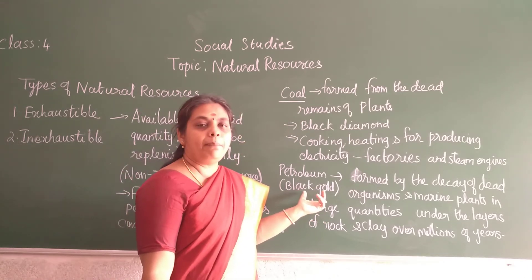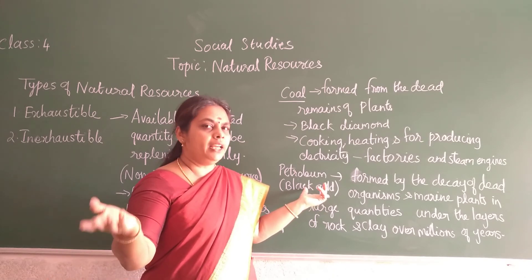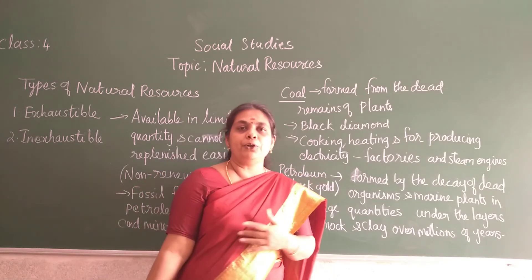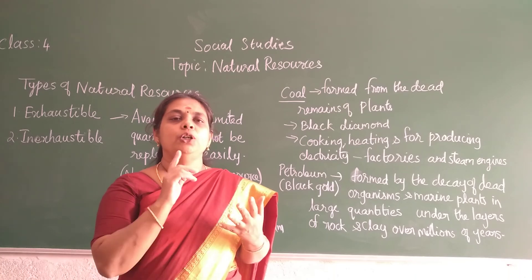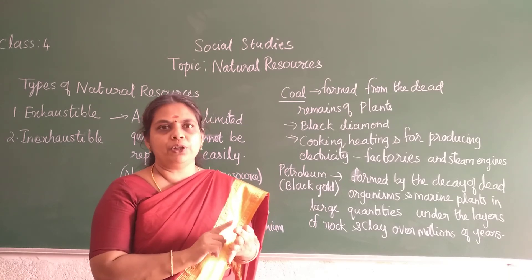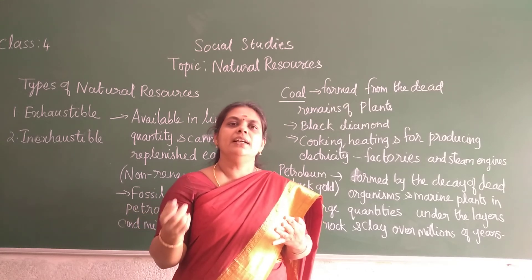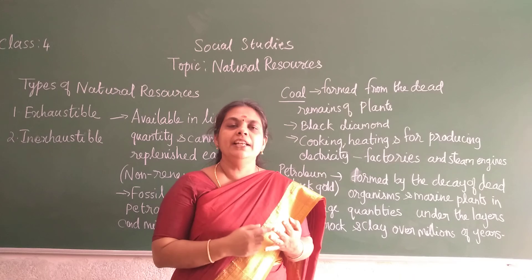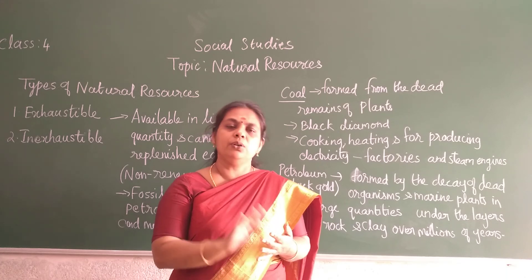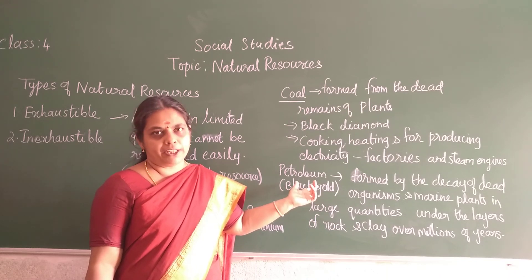The another name for petroleum is 'black gold,' because petrol and diesel costs are very high. From petroleum we get many products: petrol, diesel, kerosene, and LPG — liquefied petroleum gas. The gas cylinder we use for cooking at home is LPG gas. So from petroleum we are getting so many products.